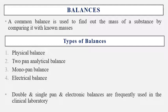There are different types of balances: physical balance, two-pan analytical balances, mono-pan balances, and electronic balances. Double and single pan balances and electronic balances are frequently used in the clinical laboratory. Open-type physical balances are not used. Two-pan analytical balances, mono-pan balances, and electronic balances are used.